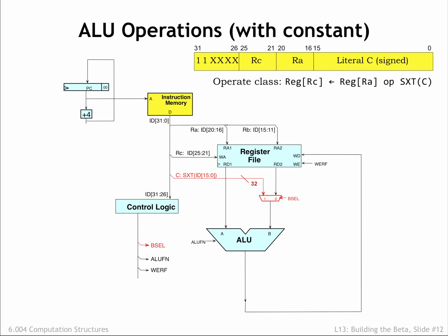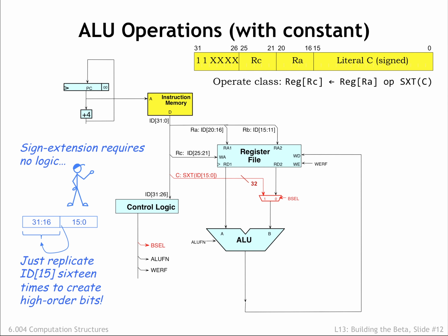The rest of the datapath is the same as before. No logic gates are needed to perform sign extension — it's all done with wiring! To sign-extend a 2's complement number, we just replicate the high-order or sign bit as many times as necessary. To form a 32-bit operand from a 16-bit constant, we replicate its high-order bit, ID15, 16 times as we make the connection to the BSEL MUX.